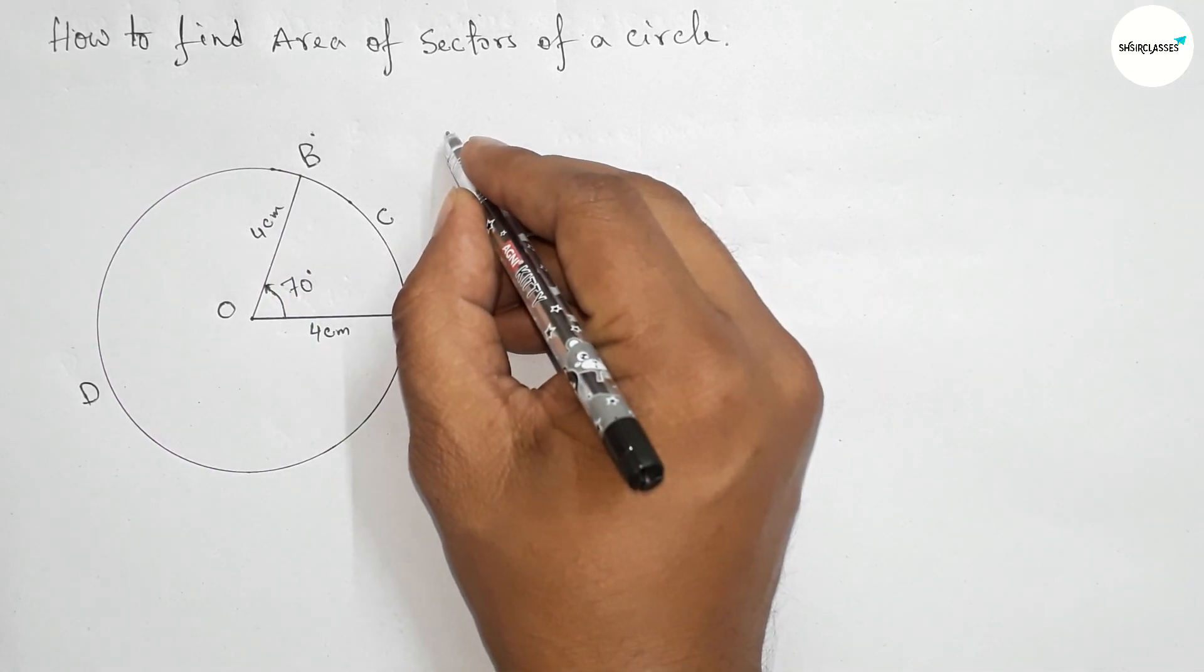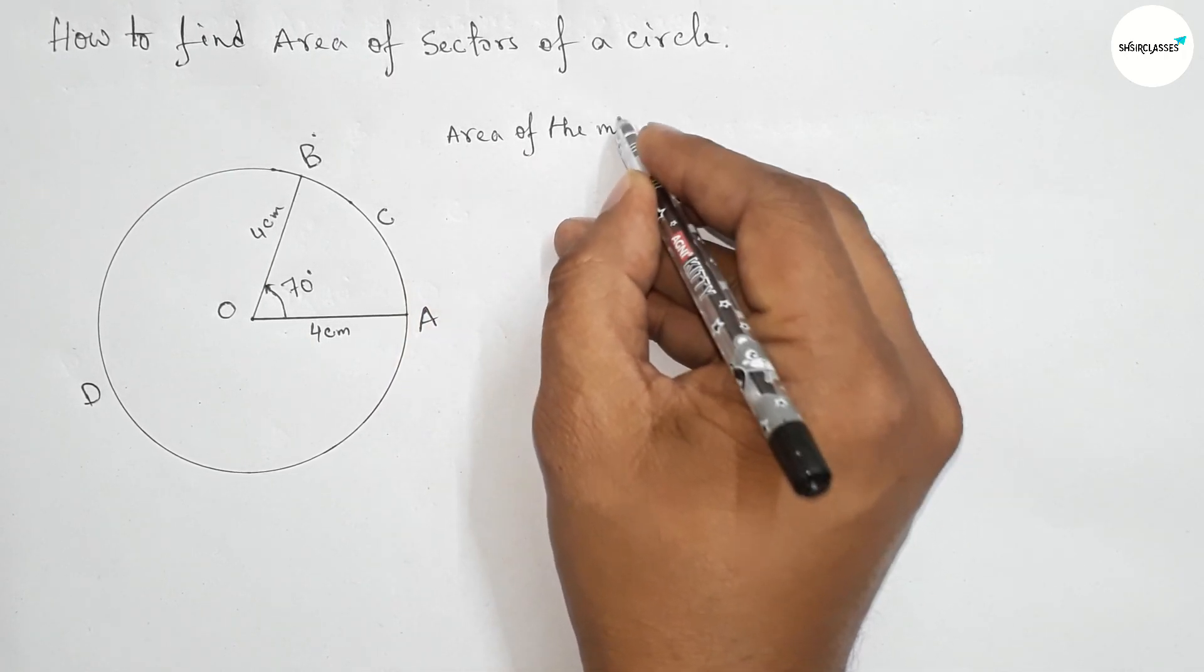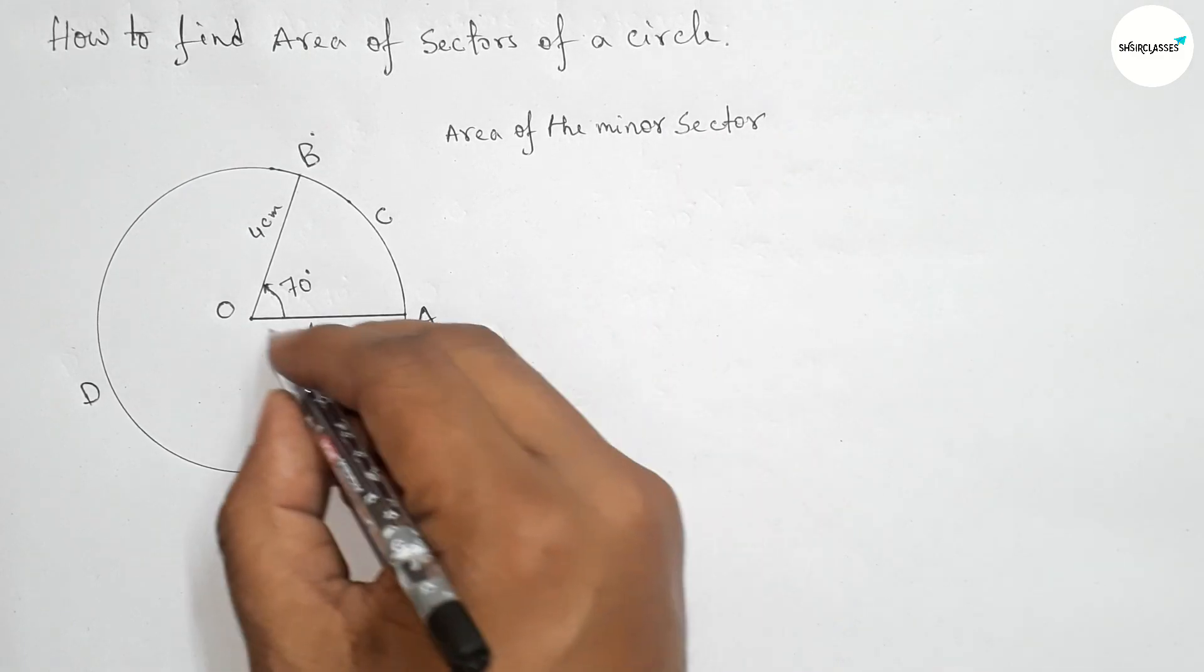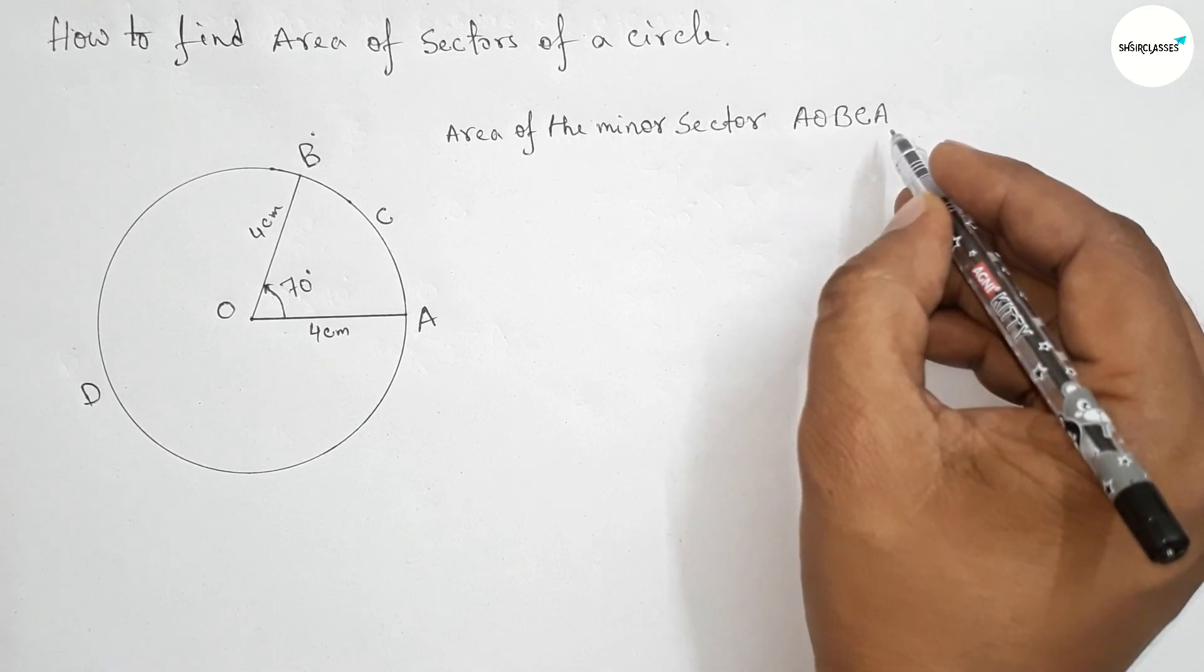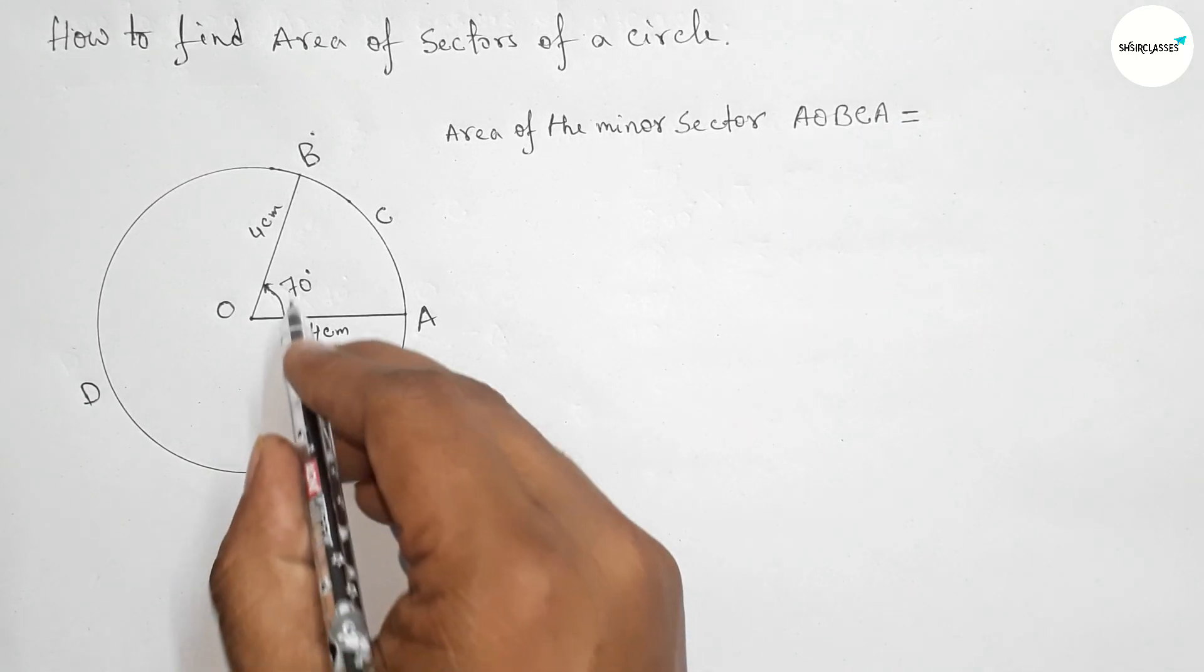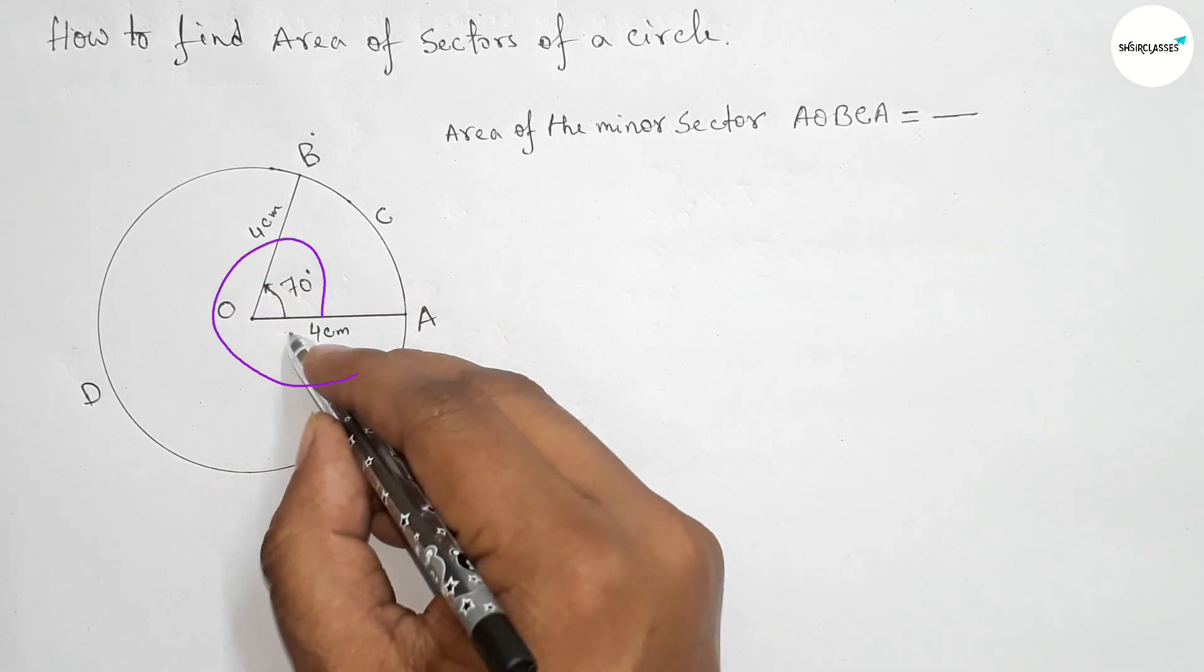So now we have to find the area of both sectors. First, find the area of the minor sector AOBCA. First, write down the angle in fraction. So the total angle is 360 and the given angle is 70, so 70 by 360.